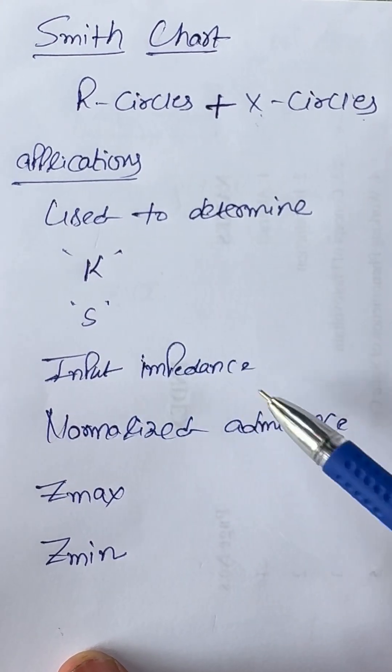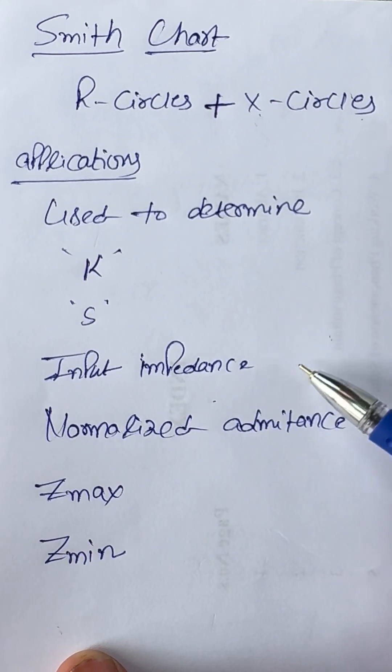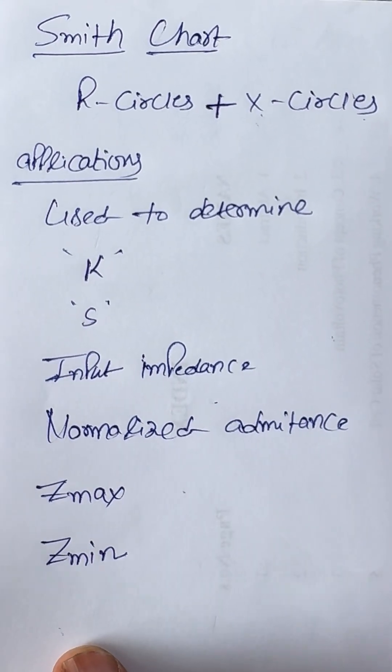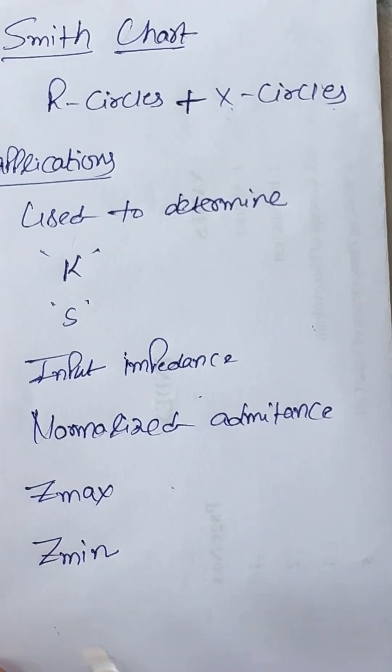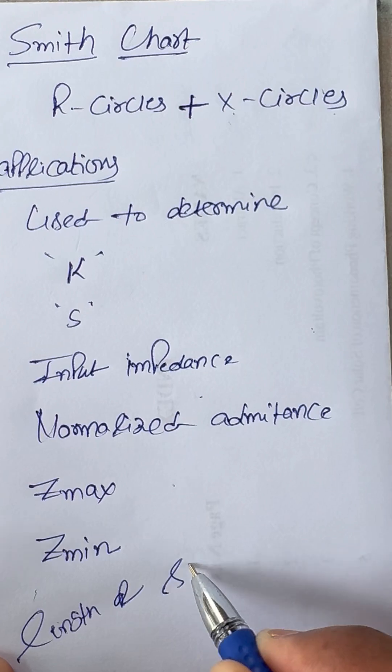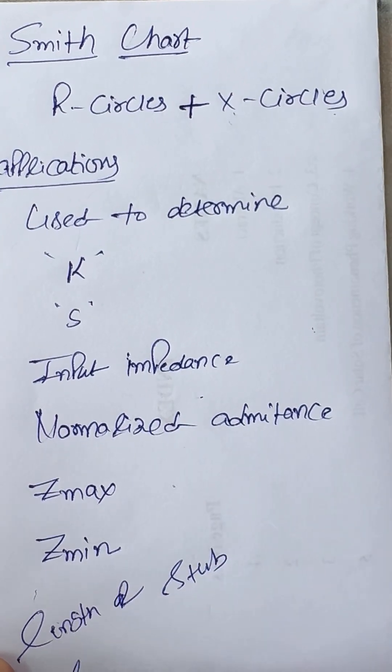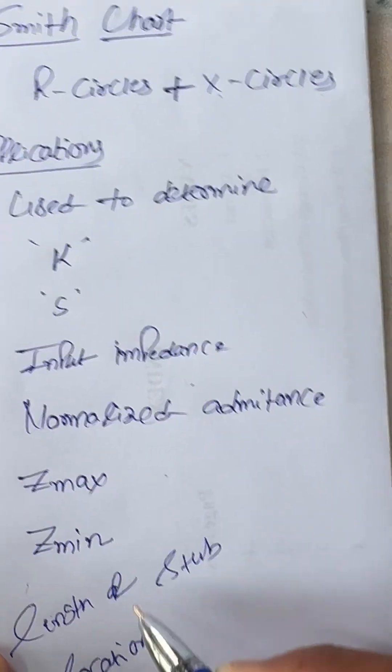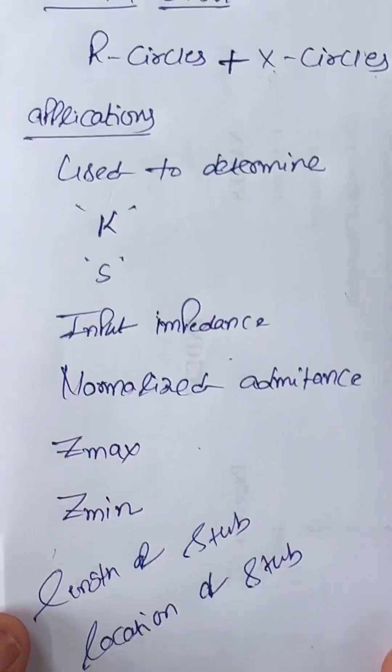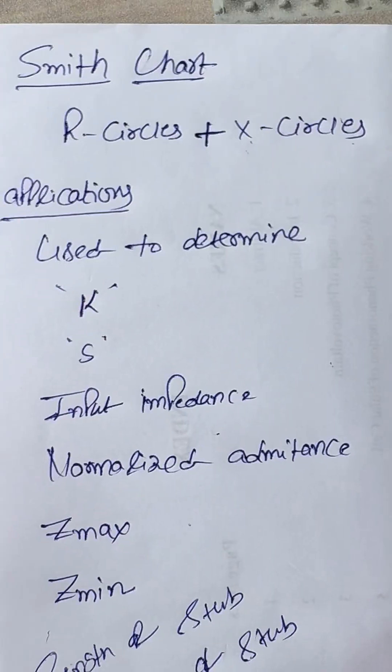VSWR, input impedance, normalized impedance, Z max, Z minimum, and length and location of stub. These are the different applications of Smith chart.